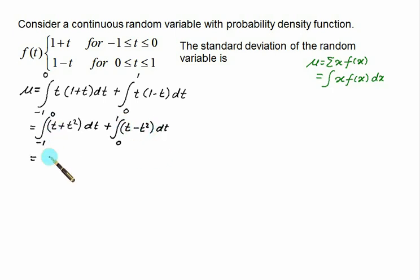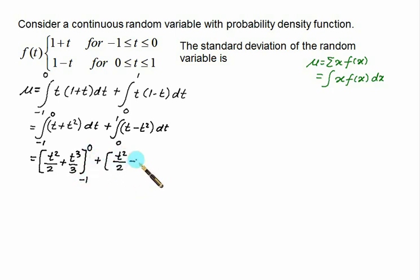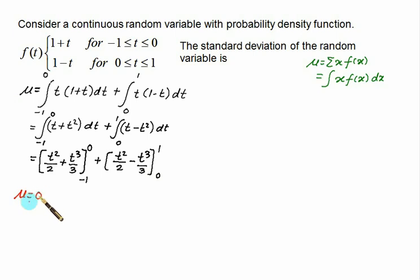Integrating: t²/2 + t³/3 evaluated from −1 to 0, plus t²/2 − t³/3 evaluated from 0 to 1. Substituting the limits, you observe that μ = 0.